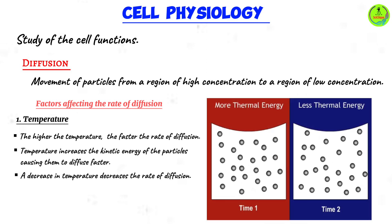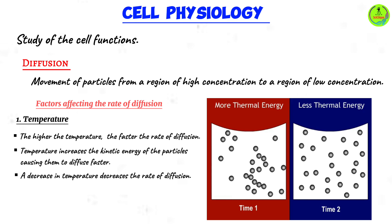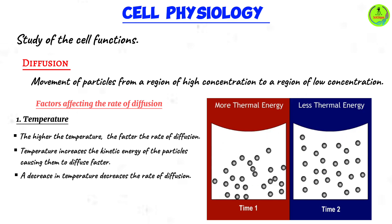By the way, when I talk about the rate of diffusion, I'm simply talking about how fast or how slow diffusion can take place. So by controlling these factors, you can either cause diffusion to occur faster or slower.